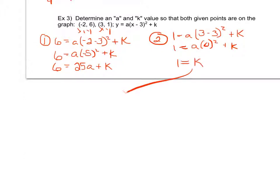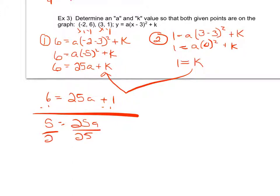So I can go ahead then and substitute this in and use that to solve for a. So 6 equals, doing that, 25a plus 1. I subtract 1 from each side to solve this linear equation. Divide by 25, and I get one fifth for my a value.